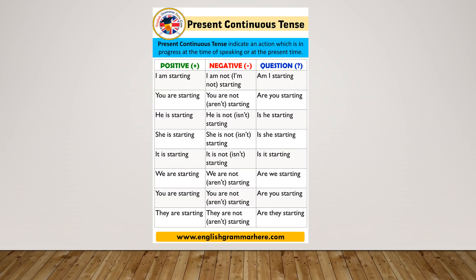In the previous videos I already explained negative sentences in Past Simple Tense and Present Simple Tense. In this slide, we will discuss Negative Sentences in Present Continuous Tense. Present Continuous Tense indicates an action which is in progress at the time of speaking or at the present time — the action is taking place at the present time.